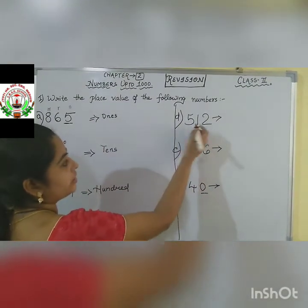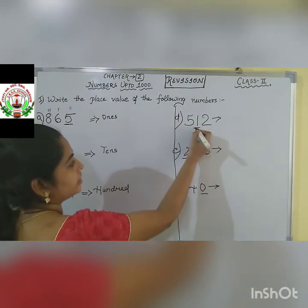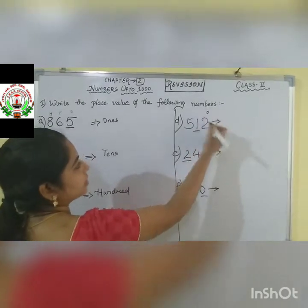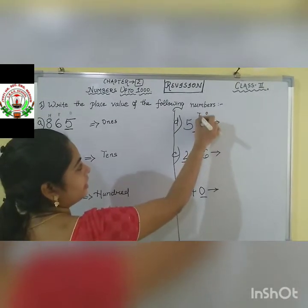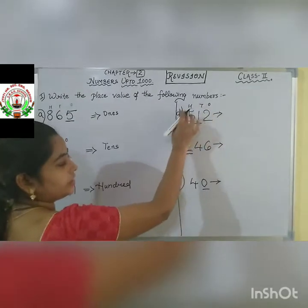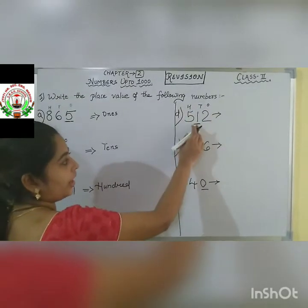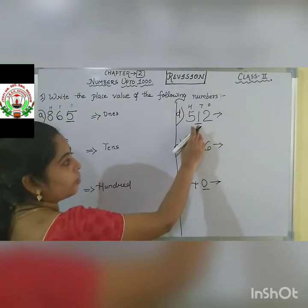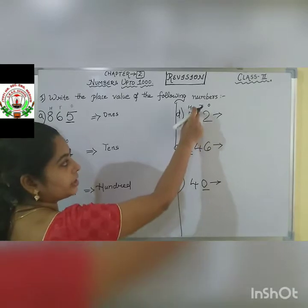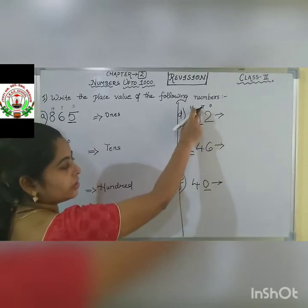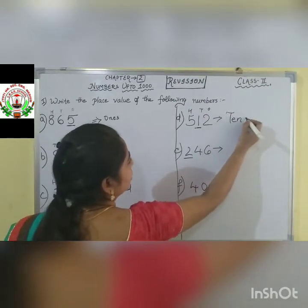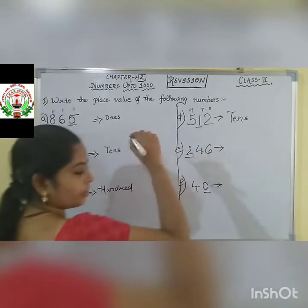Let us do the next question: 512. Here the underlined digit is 1. So give the place value — 1's, 10's, 100. See children, 1 comes under which place? 10's column. It is coming under 10's column. So we will write down the place value as 10's.